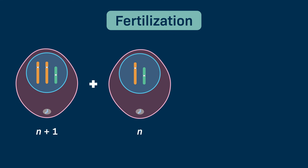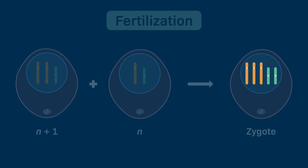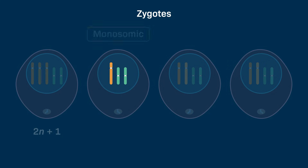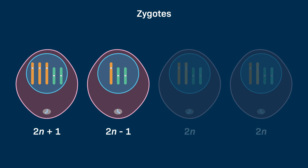One gamete would be n minus 1, and two gametes would each be n. During fertilization, if each of these gametes fuses with a normal haploid gamete, the resulting zygotes will vary in their total number of chromosomes. One zygote would be trisomic or 2n plus 1, one zygote would be monosomic or 2n minus 1, and two zygotes would each be diploid or 2n. The trisomic and monosomic zygotes are aneuploids.